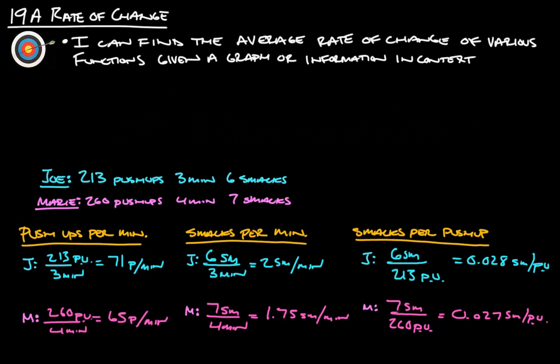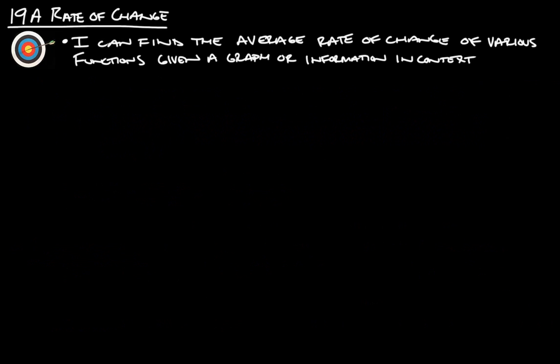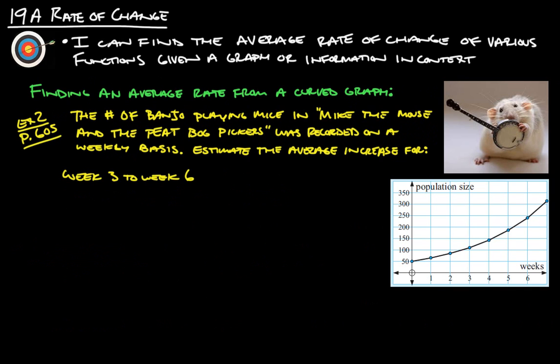Let's look at one more example and then we'll call it good. Finding an average rate from a curved graph. The number of banjo-playing mice in Mike the Mouse and the Peep-Bog Pickers was recorded on a weekly basis. Let's estimate the average increase for week three to week six.